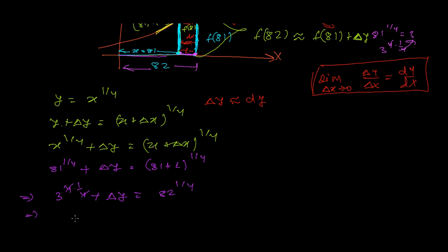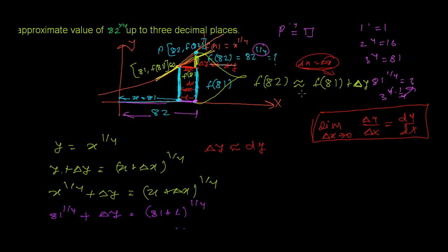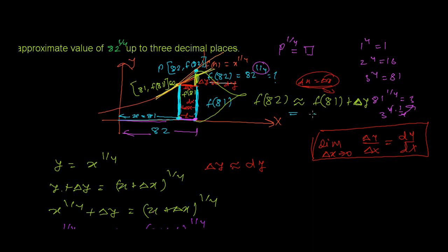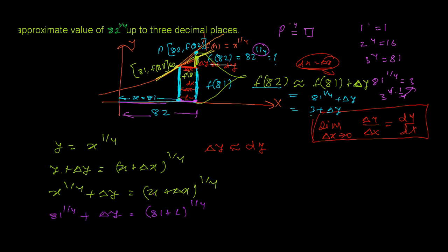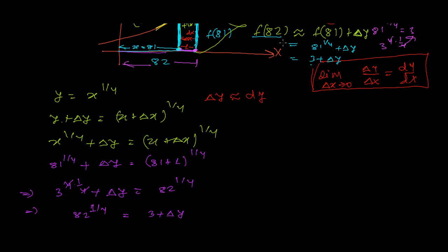Now 81^(1/4) = (3^4)^(1/4) = 3, since the fours cancel. So we get 82^(1/4) = 3 + Δy. Both the graphical and algebraic methods give the same result: f(82) = f(81) + Δy = 3 + Δy. To find 82^(1/4), we must find Δy, and we know Δy ≈ dy = f'(x) · dx.